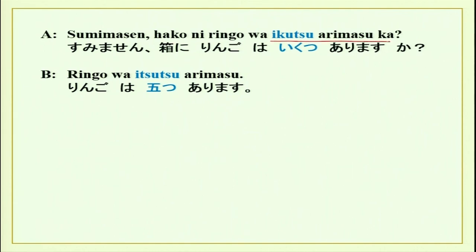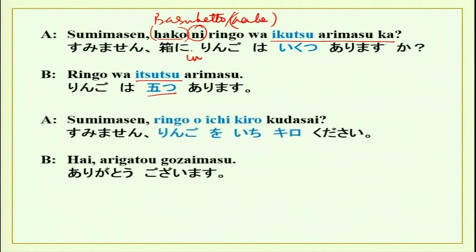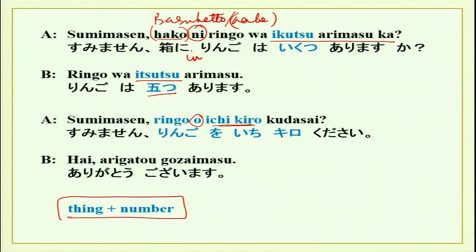Sumimasen, hako ni ringo wa ikutsu arimasu ka? Hako is basket or box — basket ni ringo wa ikutsu arimasu ka? Ni over here is 'in.' Ringo wa ikutsu arimasu ka? Five. Now sumimasen, ringo wo ichikiro kudasai — one kilogram please. Hai, arigatou gozaimasu — the shopkeeper says arigatou gozaimasu. What is important here is thing plus number. Please remember: ringo wo ichikiro kudasai. Ichikiro ringo wo kudasai is also okay and used informally. But the correct sentence construction would be thing plus number. Make sentences like this and practice with your partner.